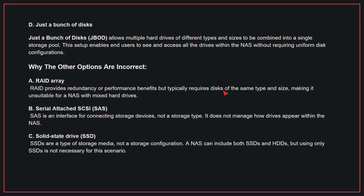Why the other options are incorrect? A, RAID array: RAID provides redundancy or performance benefits but typically requires disks of the same type and size, making it unsuitable for a NAS with mixed hard drives. B, SAS: SAS is an interface for connecting storage devices, not a storage type, and does not manage how drives appear within the NAS. C, solid state drive: SSDs are a type of storage media, not a storage configuration. A NAS can include both SSDs and HDDs, but using only SSDs is not necessary for this scenario. Therefore, the correct answer is D, just a bunch of disks.